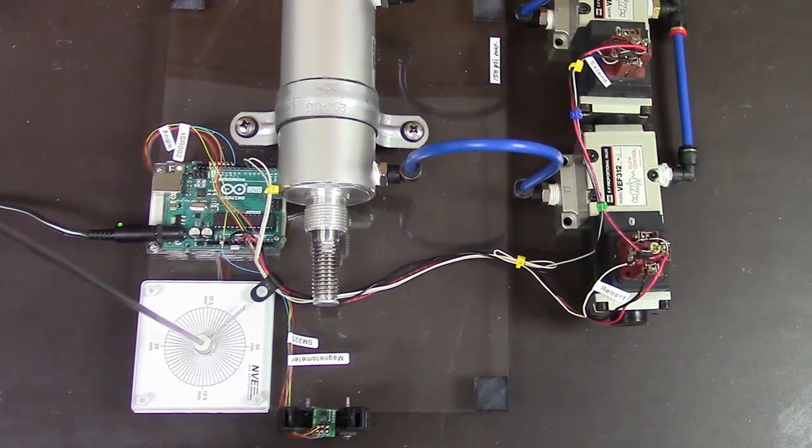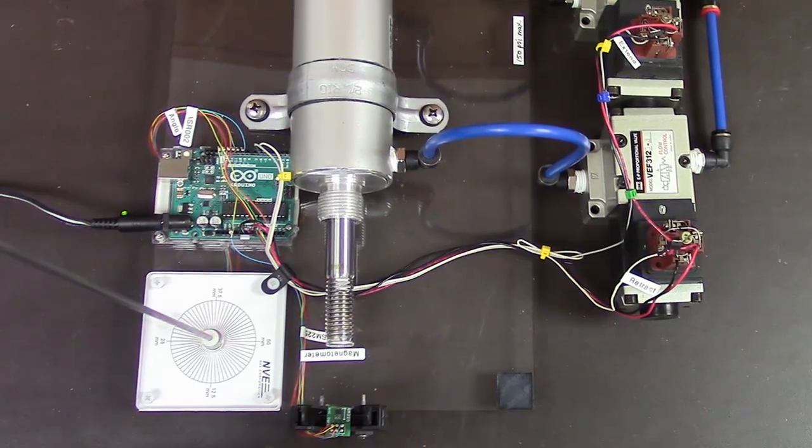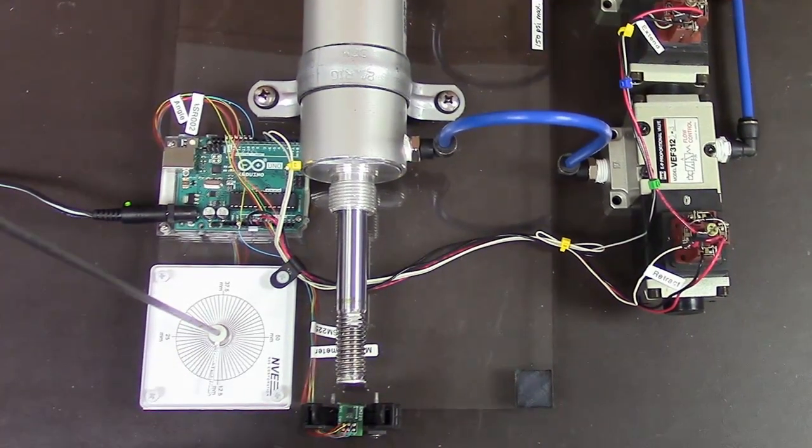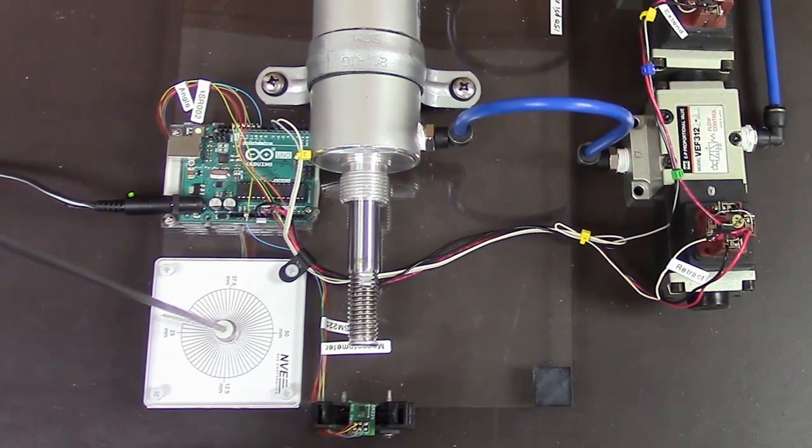The magnetometer's sensitivity and wide range give us precise control over a 50 millimeter range. We demonstrated on-off control using a simpler valve in another video, but this is much smoother.